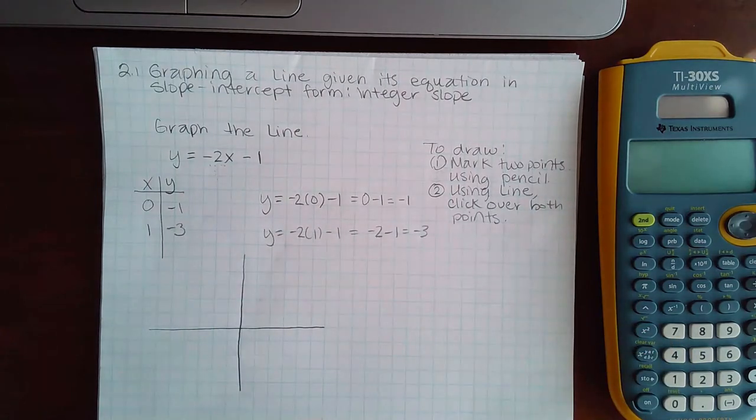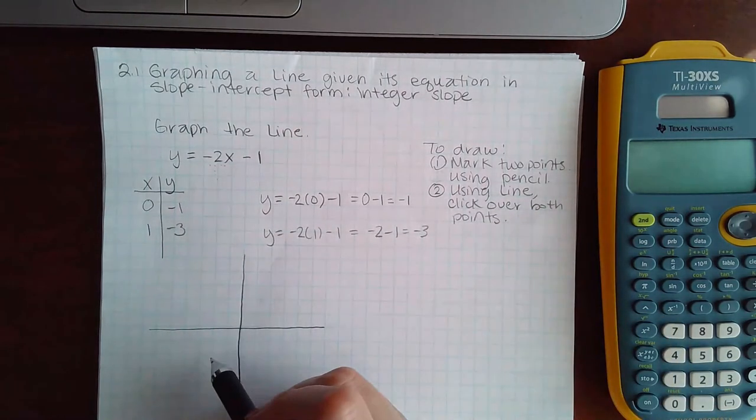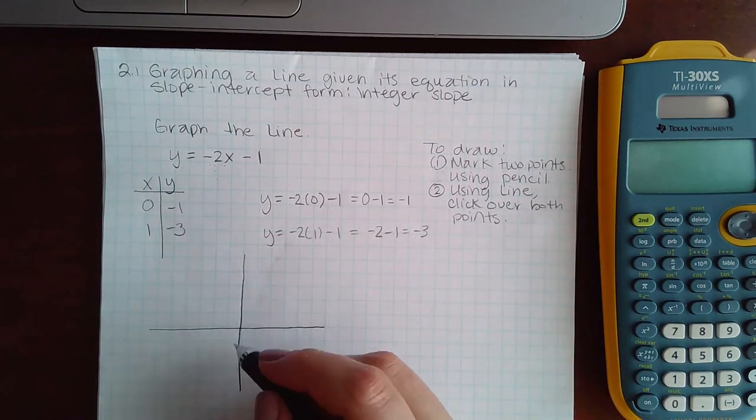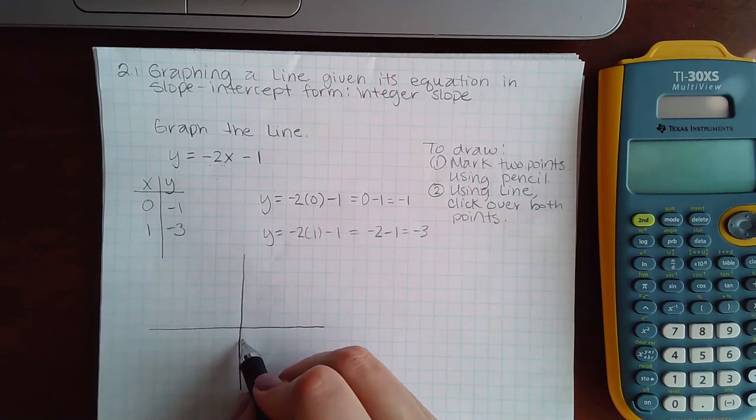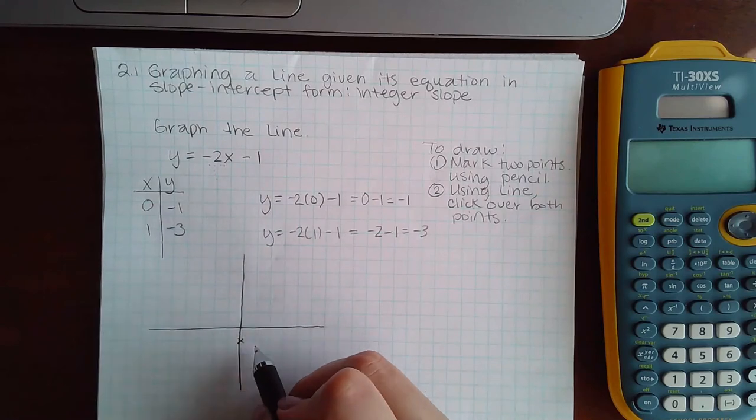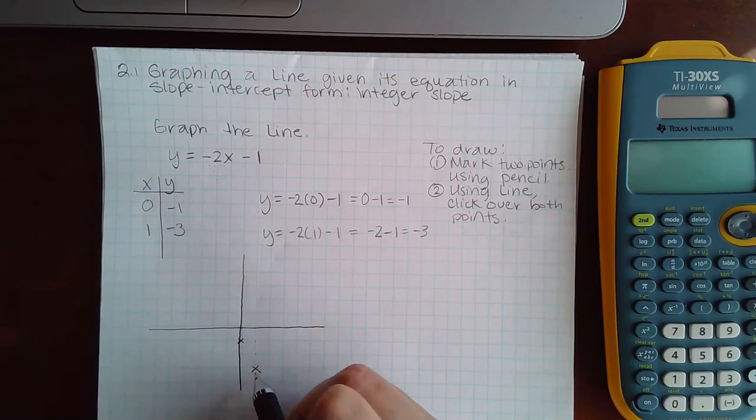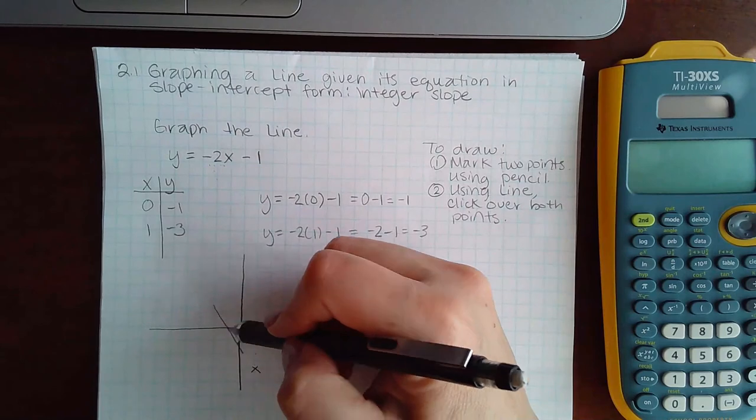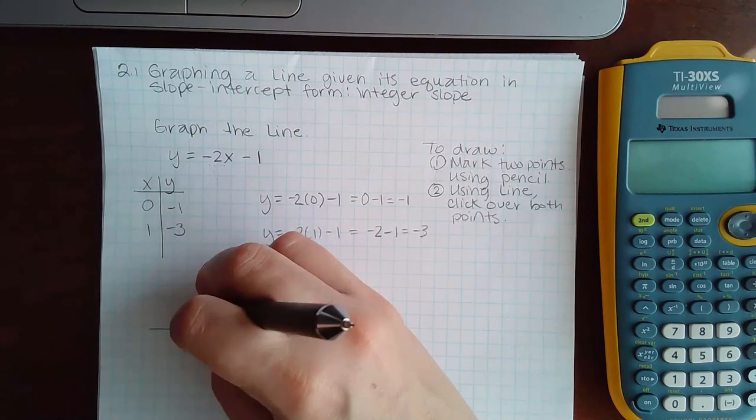If I do that, I will grab the line icon and then go to 0 and negative 1 and left-click there. It'll put an x. Then go to 1 and negative 3 and left-click there, and it will automatically draw the x and the line.